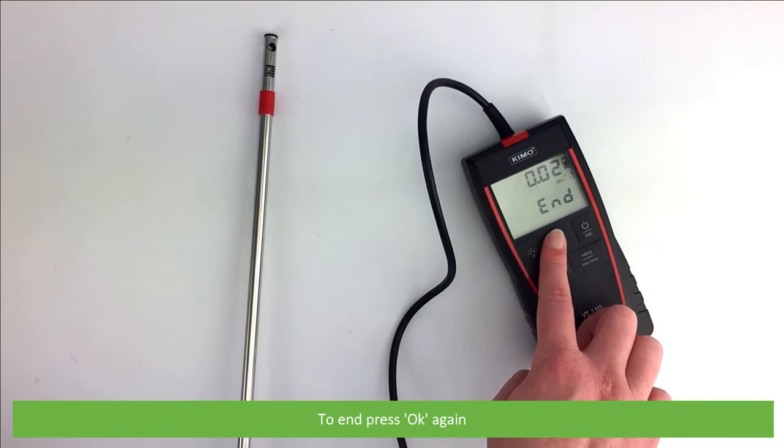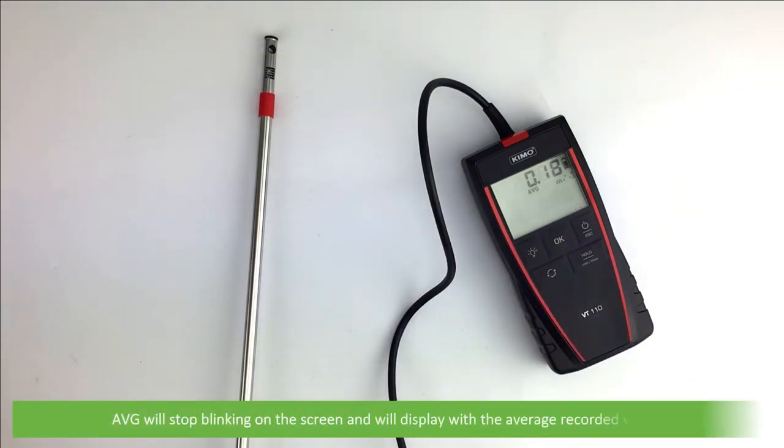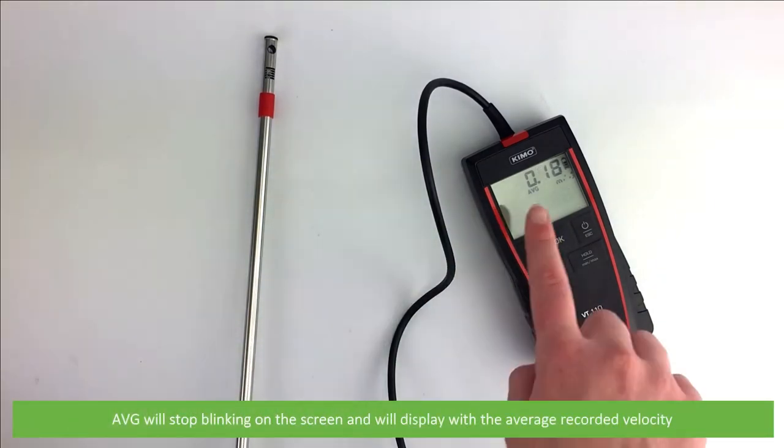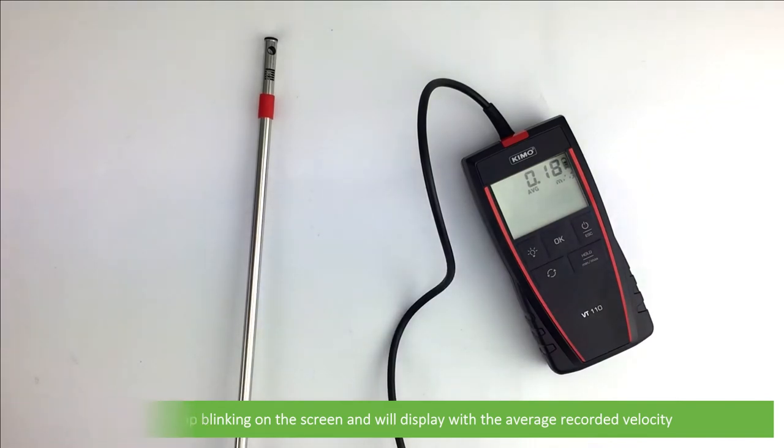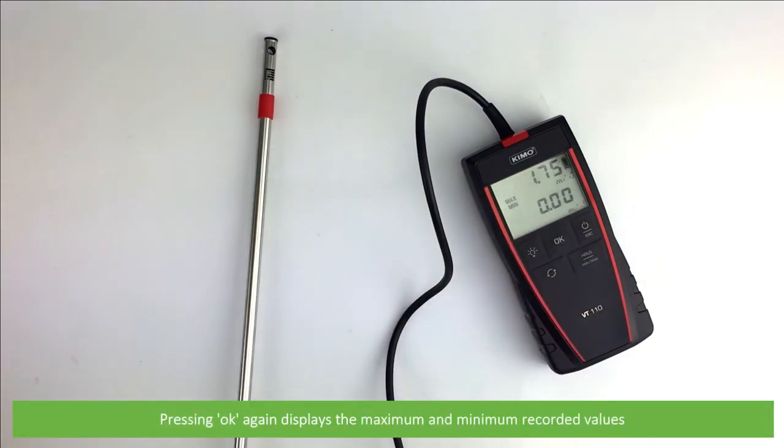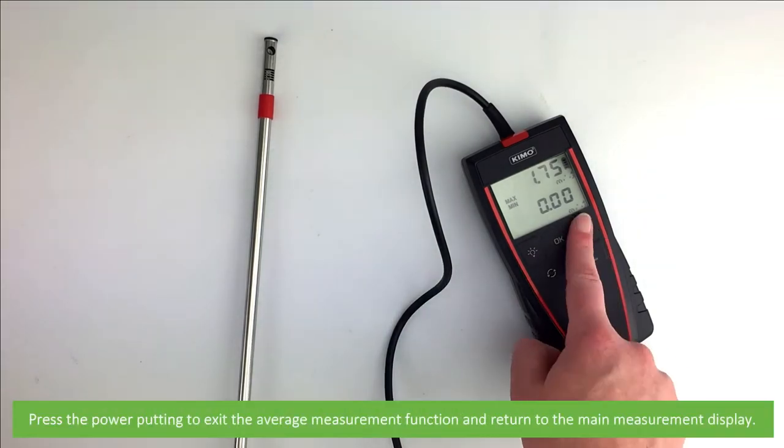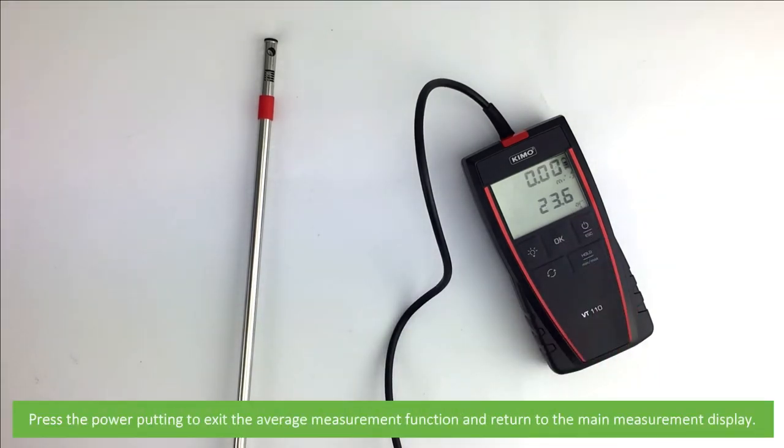To end, press OK again. AVG will stop blinking on the screen and will display the average recorded velocity. Pressing OK again displays the maximum and minimum recorded values. Press the power button to exit the average measurement function and return to the main measurement display.